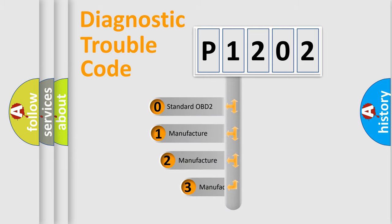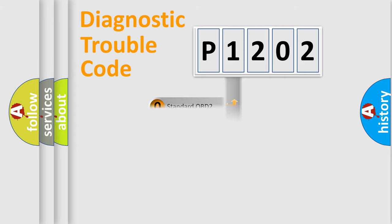If the second character is expressed as zero, it is a standardized error. In the case of numbers one, two, or three, it is a manufacturer-specific expression of the car-specific error.